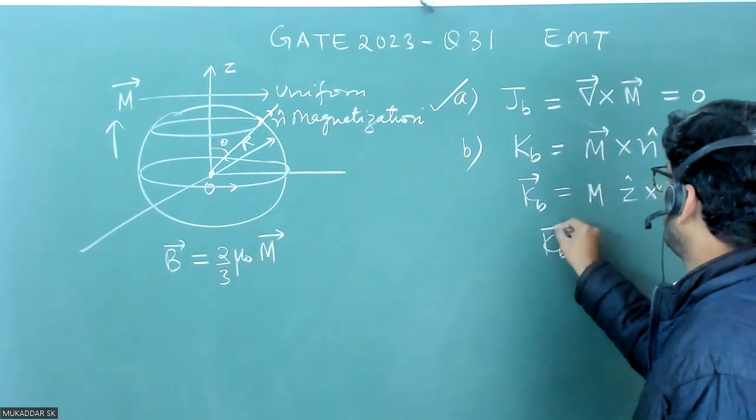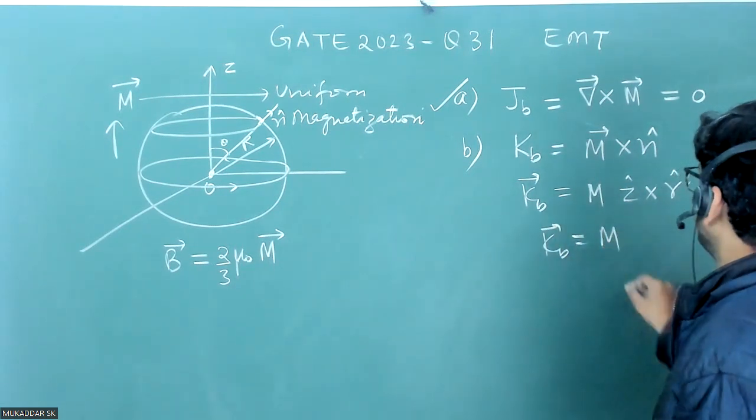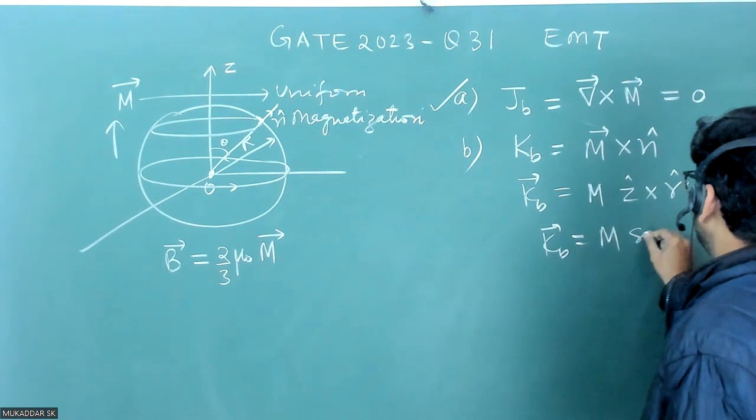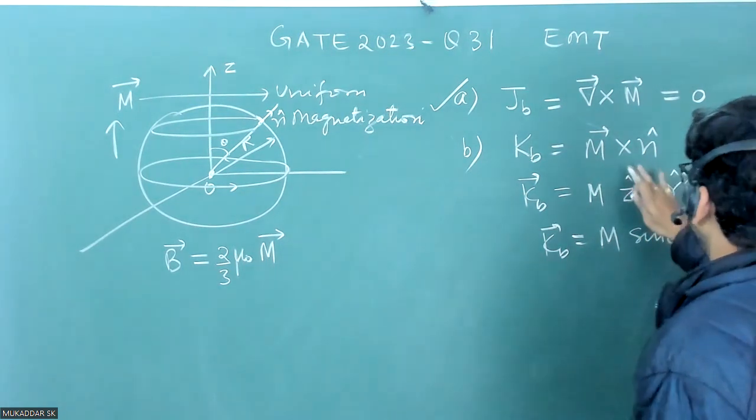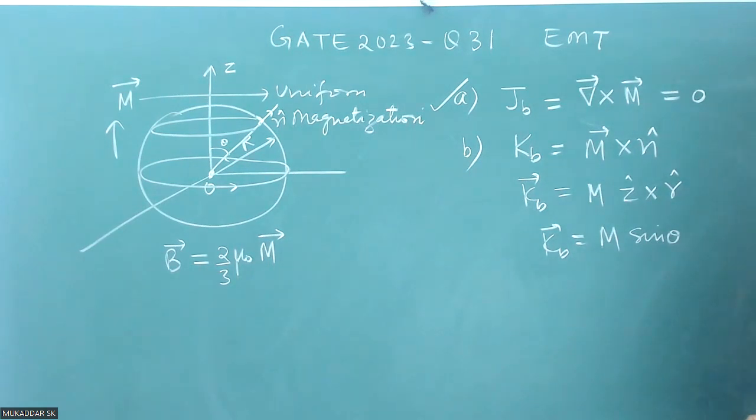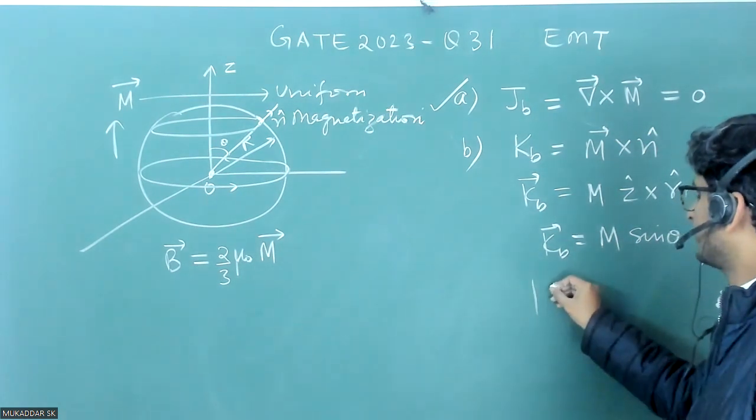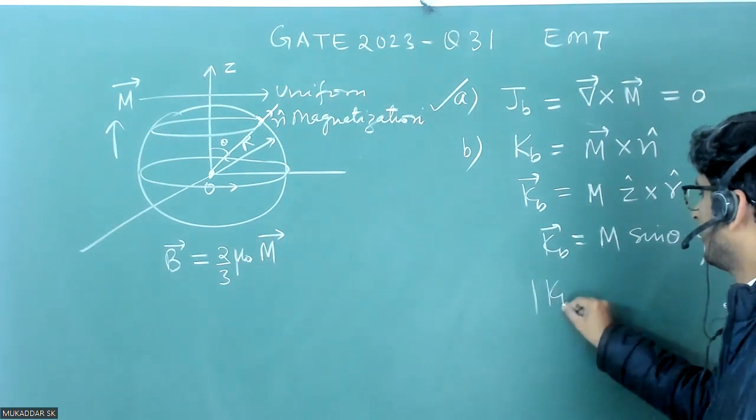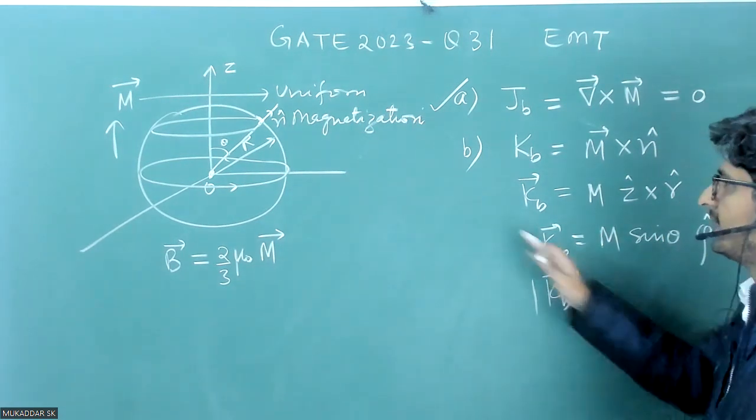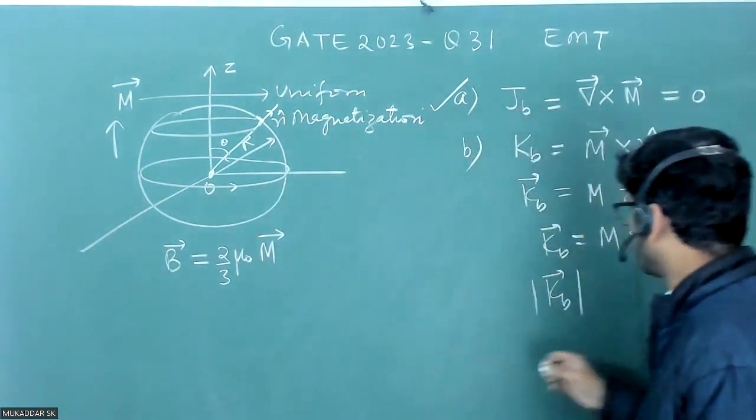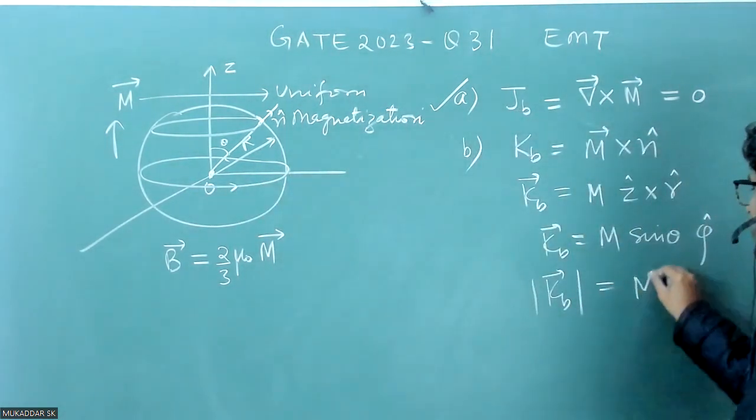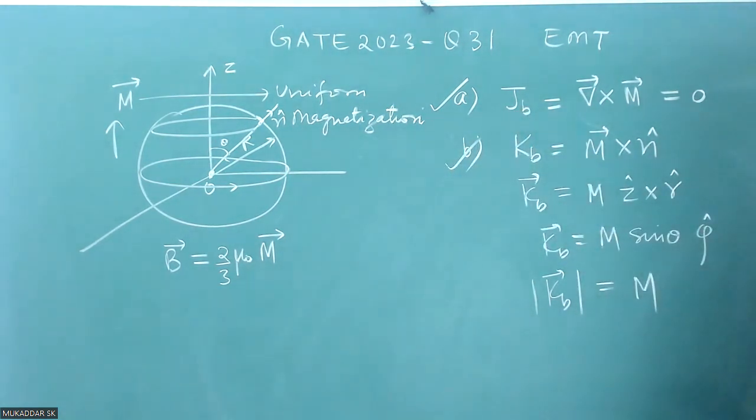It will be M cross N. So what is the angle between Z cap and R cap? It is sine of theta, and phi cap will be the direction of this KB. They have asked, what is the maximum value of KB? And that is at equator. That means if theta becomes 90 somewhere here, that will be obviously equal to M. So this option is also correct.